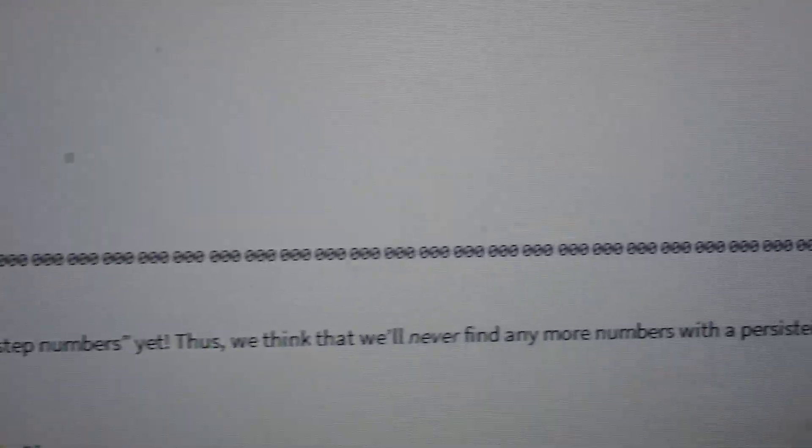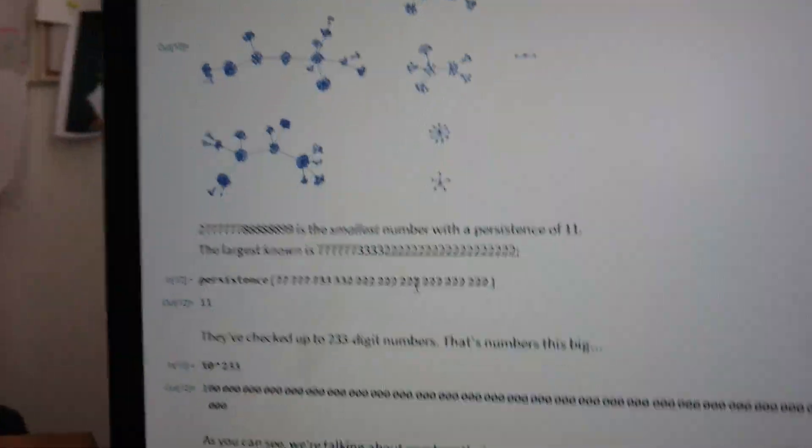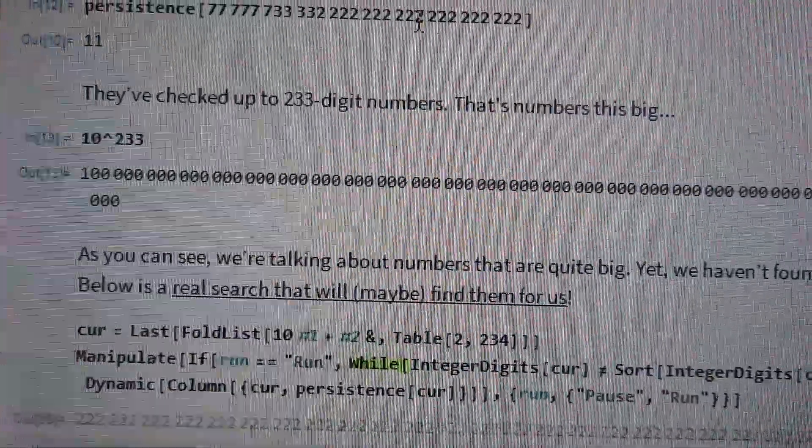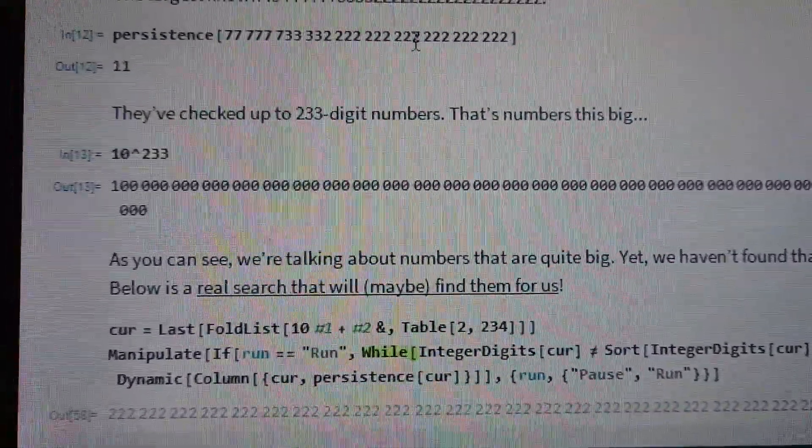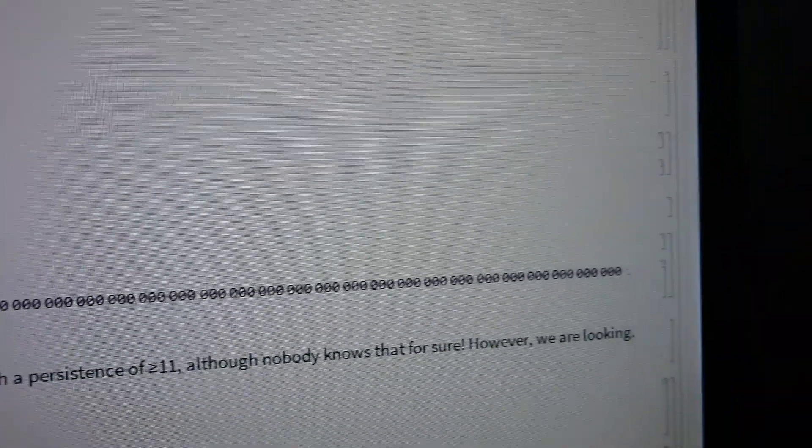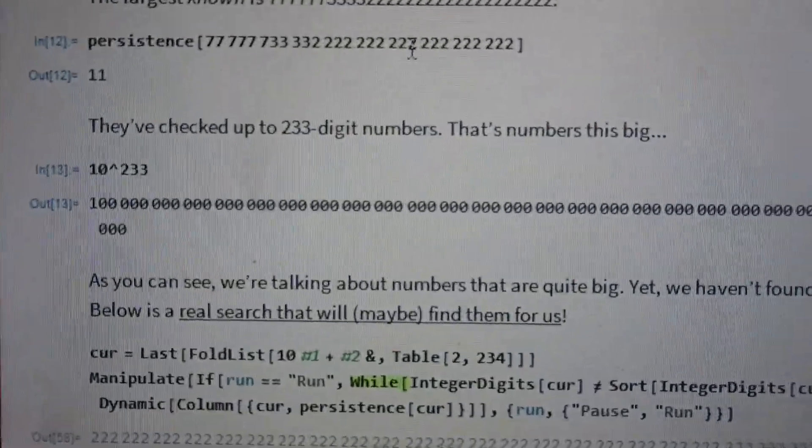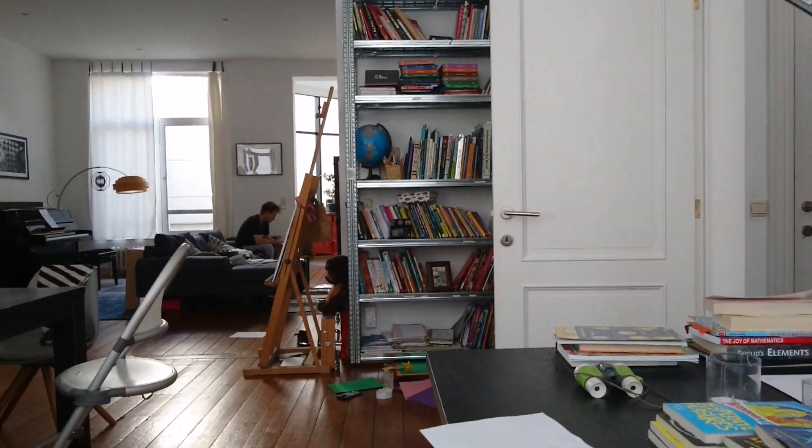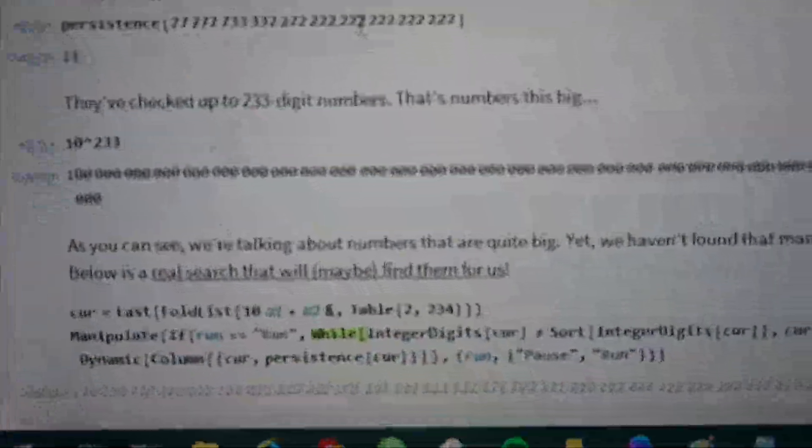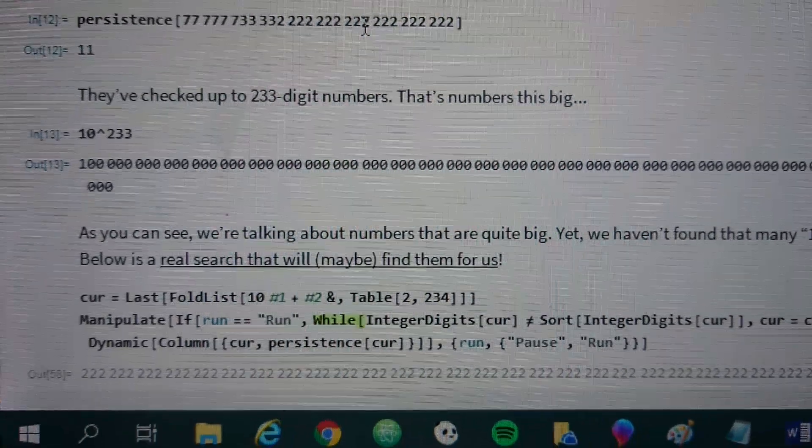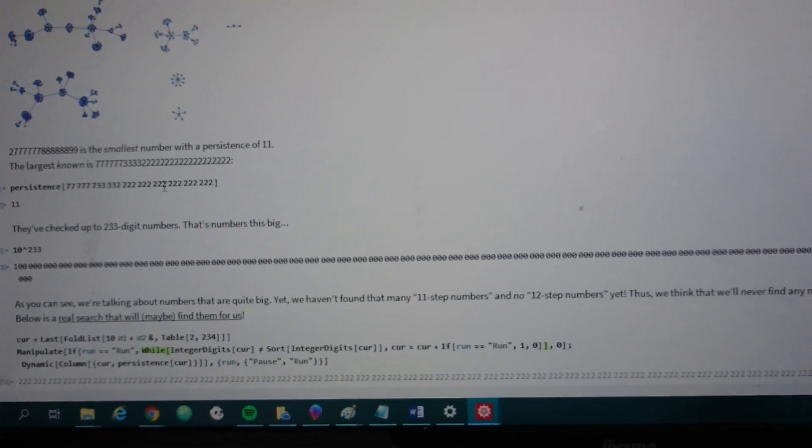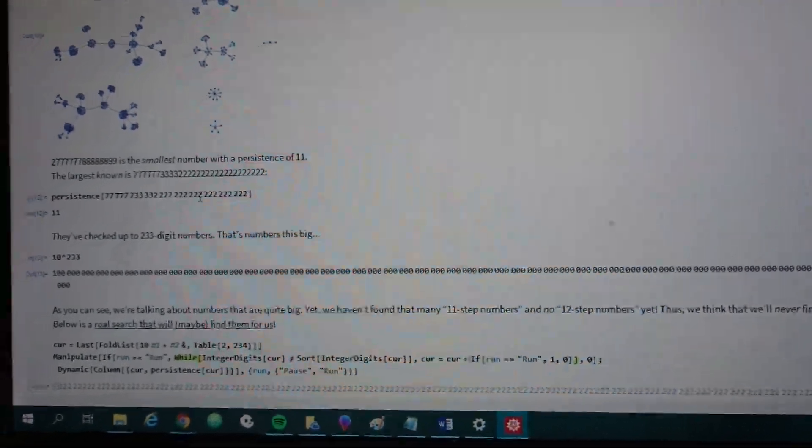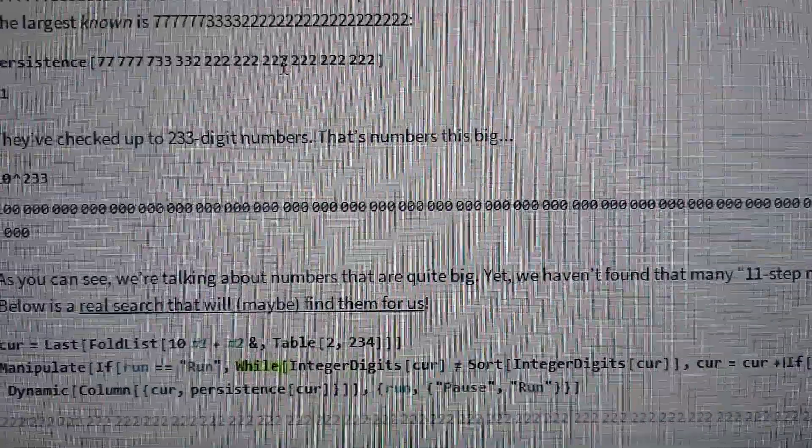So they've checked up to 233 digit numbers. So that's numbers people have checked. So that's numbers this big. People can't see anything. I'm talking about numbers that are quite big. So 10 to the power of 233. That's a lot of zeros. But this is just an example. It's not only bigger than a Google. It's bigger than a Google Google. But you're looking for higher persistence numbers. So you want to eliminate. Yet we haven't found any more 11 step numbers. No 12 step numbers. And so we think that this is the largest number with a persistence of 11. And that there are no numbers with persistence of 12.